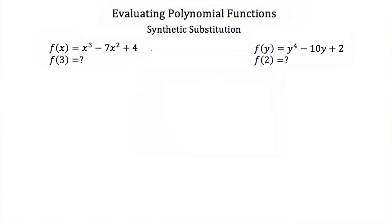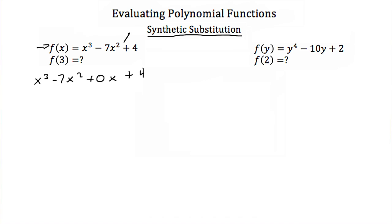Now there's a second way to evaluate polynomial functions, and that's called synthetic substitution. To do synthetic substitution, you first have to write out all the coefficients of your expression. We have x³ − 7x² + 4, but you must include the missing terms. So rewrite this as x³ − 7x² + 0x + 4. We need that zero coefficient to do our synthetic substitution.